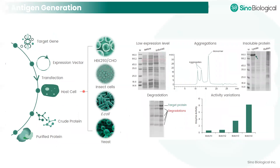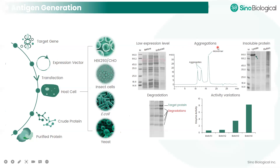For Sinobiological, we prefer to use proteins as immunogens for antibody generation, particularly targeting for ELISA and other functional applications such as neutralizations. We have already set up several recombinant technology platforms to support antigen generation, including HEK 293 cells, insect cells, E. coli, and yeast cells. Antigen generation is a very challenging step because antigens could have very low expression levels, can aggregate, form insoluble parts, or degrade during expression and purification stages.